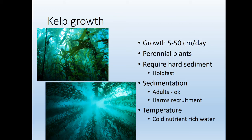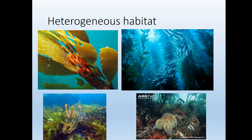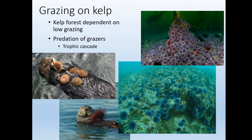Kelp is most commonly found in cold, nutrient-rich water — off the coast of California up through Alaska. There's less kelp in the Atlantic because the Gulf Stream brings too much warm water. This is a story of heterogeneous habitat: even more three-dimensional than seagrass, with more niches for organisms to inhabit.